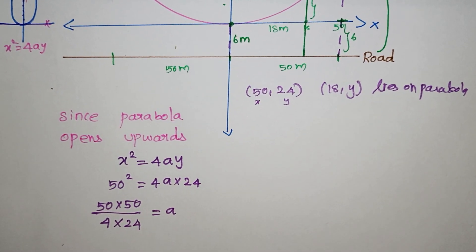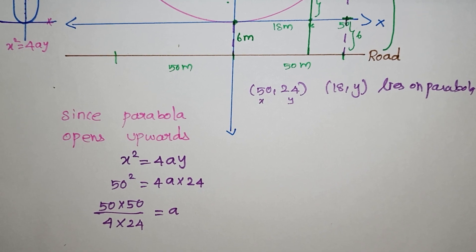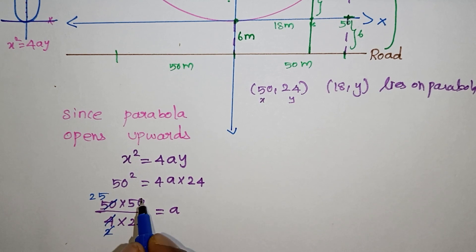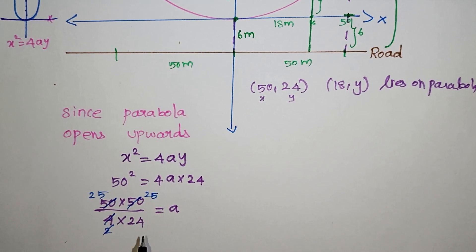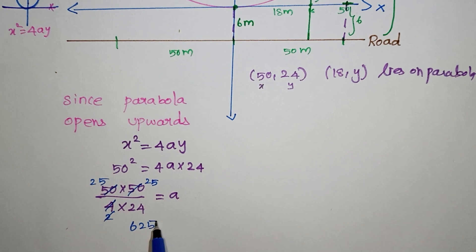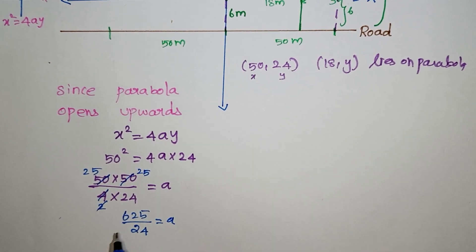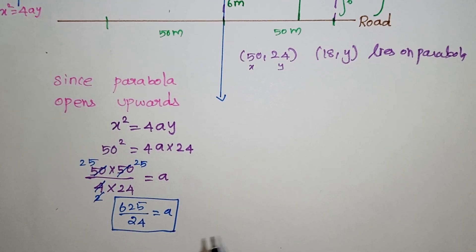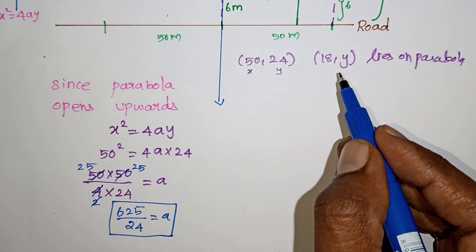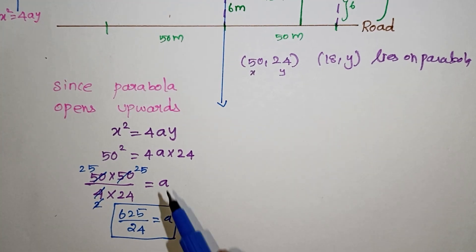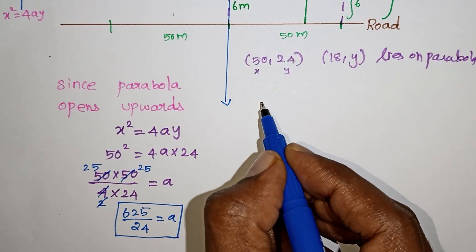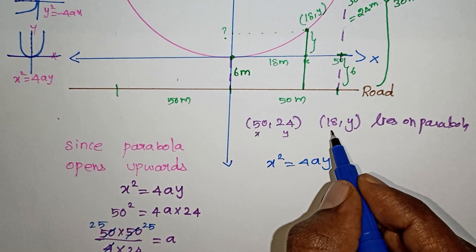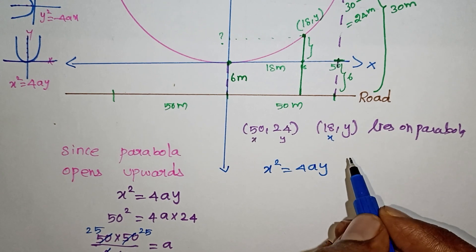So 50² = 4a × 24. That gives us 2500 = 96a, and 25 × 25 = 625 in the numerator. Cancelling, a = 625/24.